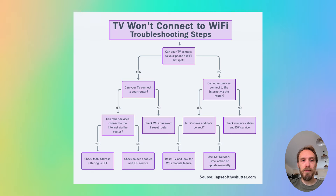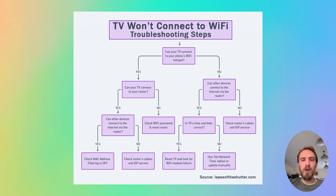The first step is to determine if the problem is with your TV itself or with your Wi-Fi router. To help localise the problem, set up a hotspot on your phone and then connect your TV to your phone's hotspot. You can set up a hotspot on iPhones from the personal hotspot option, and on Android from hotspot and tethering within network and internet.